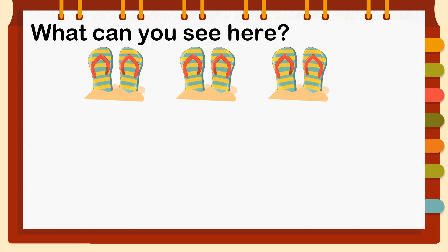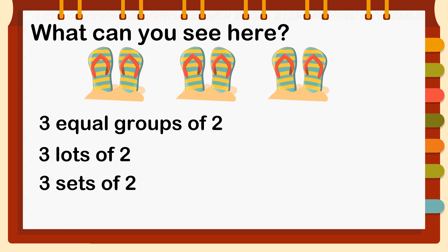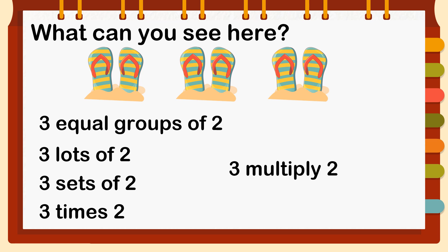Well done. What can you see here? On the screen we have three groups of a pair of sleepers — one, two, and three. Each pair contains two sleepers. The right multiplication sentence for this image is: three equal groups of two. We can also call it three lots of two, three times two, three sets of two, or three multiply two.